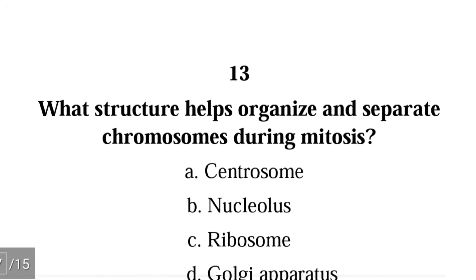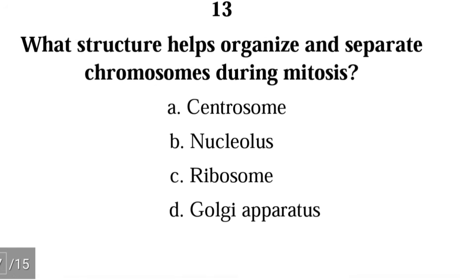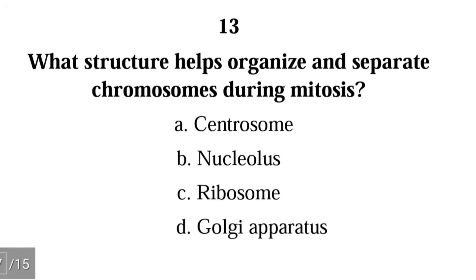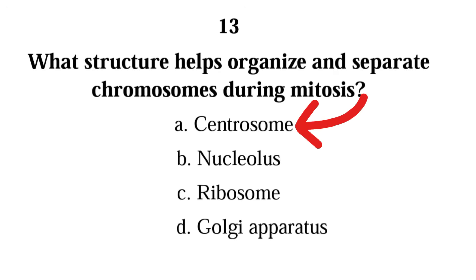Question 13: What structure helps organize and separate chromosomes during mitosis? A) centrosome, B) nucleolus, C) ribosome, D) Golgi apparatus. The correct answer is A) centrosome. Centrosomes form the mitotic spindle — they form the spindle fibers that help separate chromosomes during mitosis.